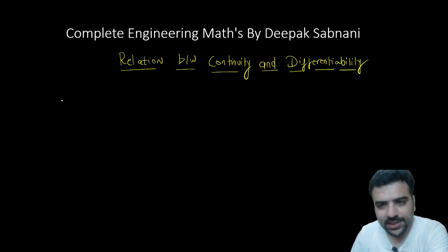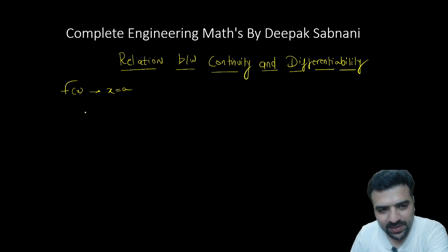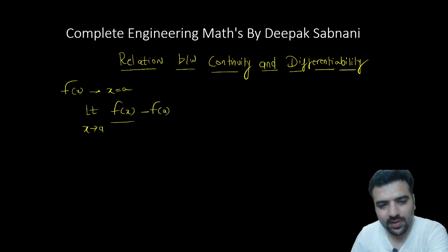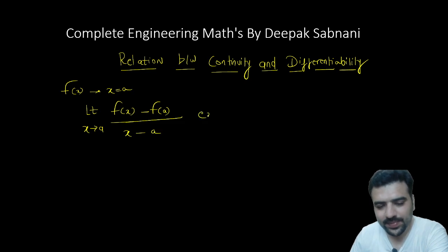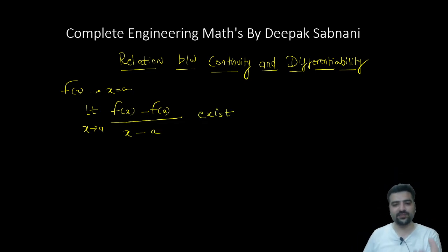A function f(x) is said to be differentiable at x equal to a if the limit as x approaches a of [f(x) minus f(a)] divided by [x minus a] exists. It is said to be differentiable if this limit exists.